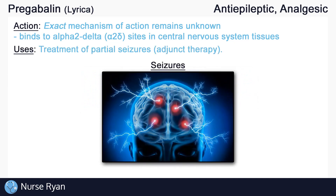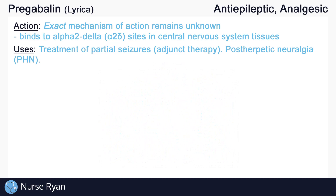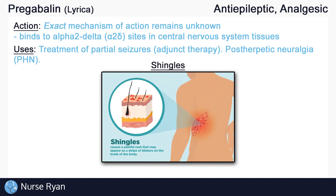Pregabalin can be used in the treatment of partial seizures, usually as an additive or adjunct treatment option. Pregabalin is also used in the treatment of postherpetic neuralgia, which is a fairly common complication of shingles. Postherpetic neuralgia may present as a painful burning or stabbing sensation which may continue long after the shingles rash and blisters go away.